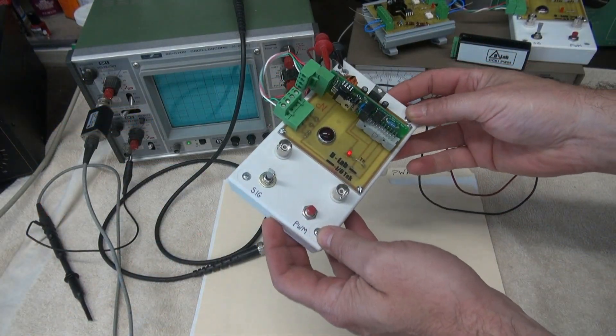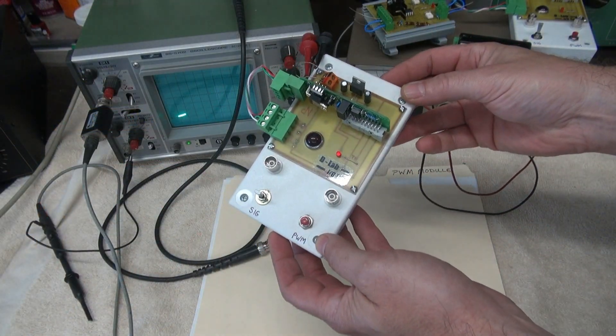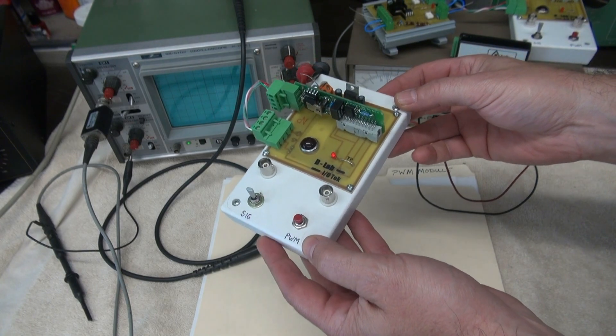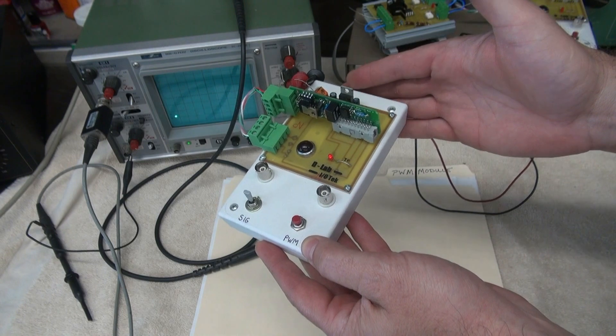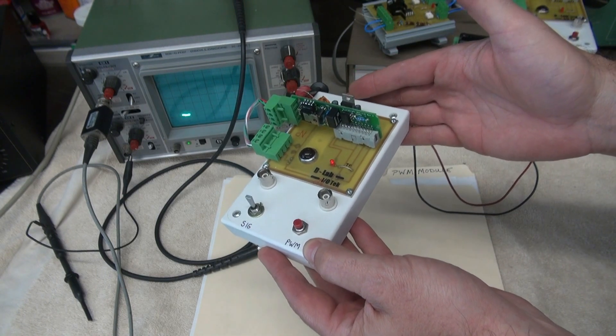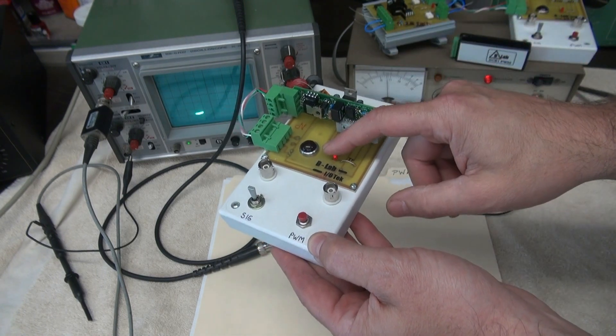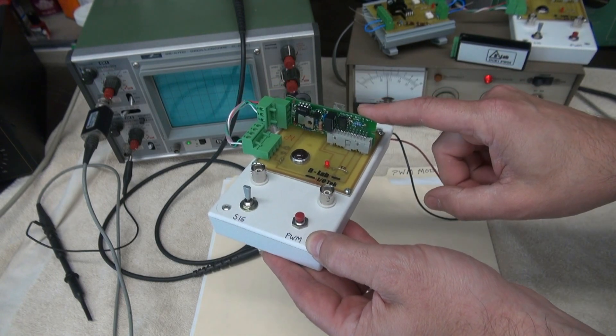So here it is, the D-Lab IOTech. Now why do I call it the IOTech? It's because this little box is designed to sit on a bench and assist a technician in checking the inputs and outputs of unique control boards.